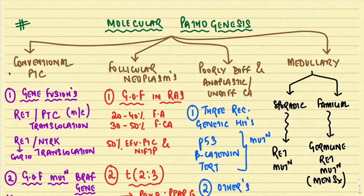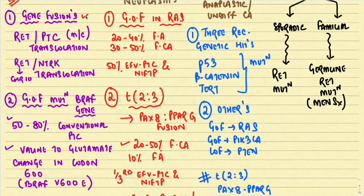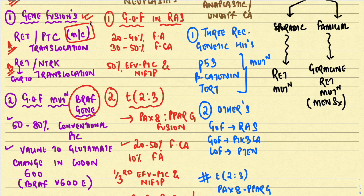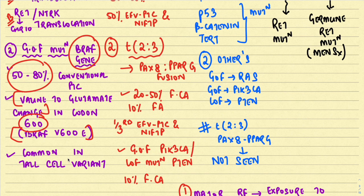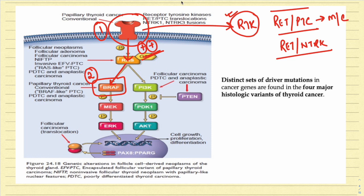For the molecular pathogenesis of conventional papillary thyroid carcinoma: gene fusions can take place, or a gain-of-function mutation in the BRAF gene can occur. Among gene fusions, number one is the RET/PTC translocation and number two is the RET/NTRK translocation. RET is present on chromosome 10, and the most common variety is the RET/PTC translocation. The second type is a gain-of-function mutation in the BRAF oncogene — around 50 to 80 percent of conventional papillary thyroid carcinomas contain a valine to glutamate change at codon 600, called the BRAF V600E mutation. This BRAF mutation is very common in the tall cell variant.